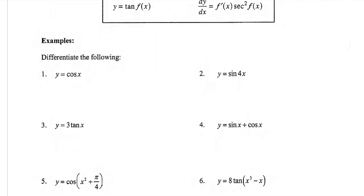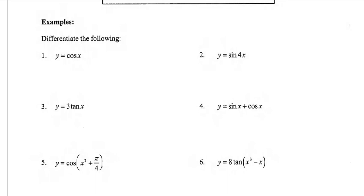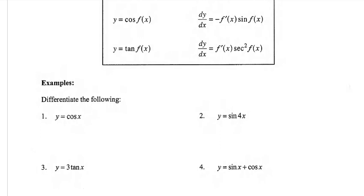Question 1: differentiate y equals cos x. The function is x, so the derivative is 1. Differentiating cos has a minus sign, so it's minus 1, or just minus, and cos changes to sine of my function, which was x. So dy/dx equals minus sine x.